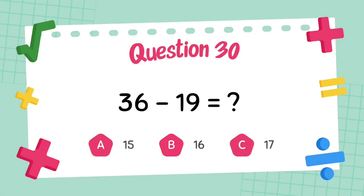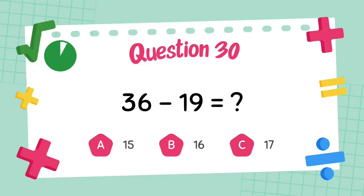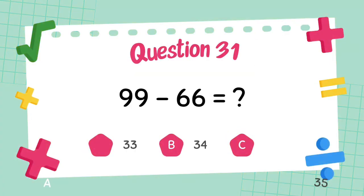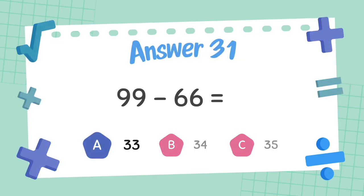What is 36 minus 19? The answer is 32. What is 85 minus 55? The answer is 33.